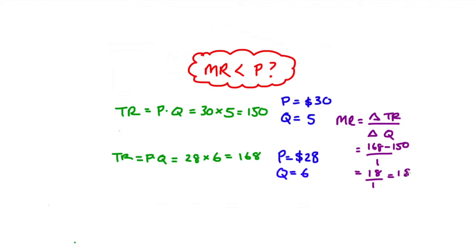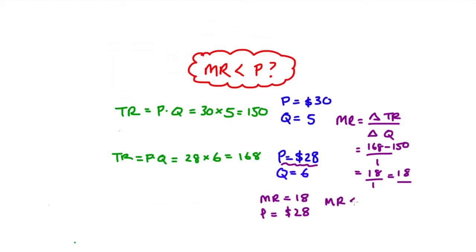What this is saying is that as a consequence of increasing our production to six blue boxes, we've increased our total revenue by 18. Our marginal revenue is 18. And the price we saw is $28. So we've shown quite clearly that the marginal revenue is indeed less than our price — 18 is less than 28.